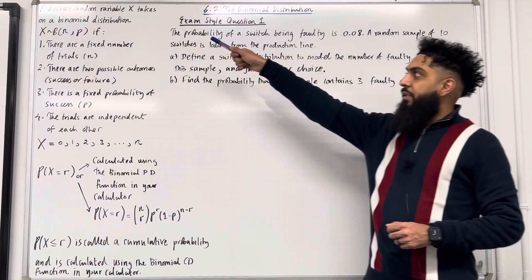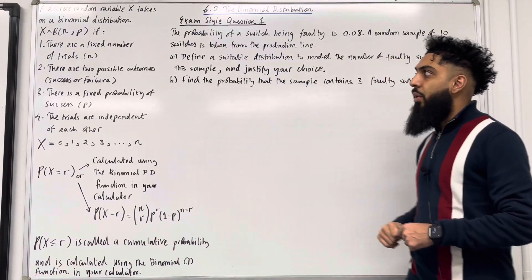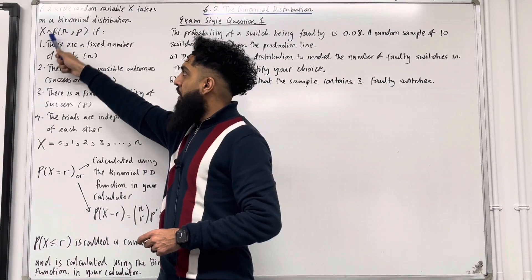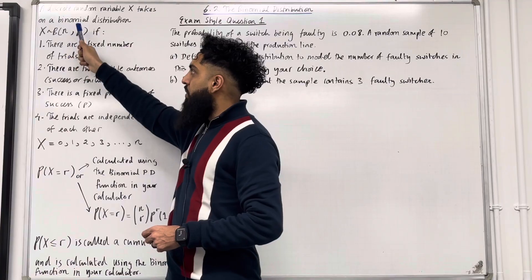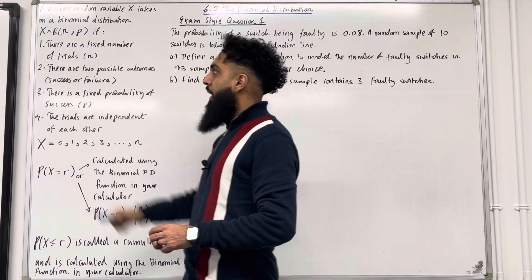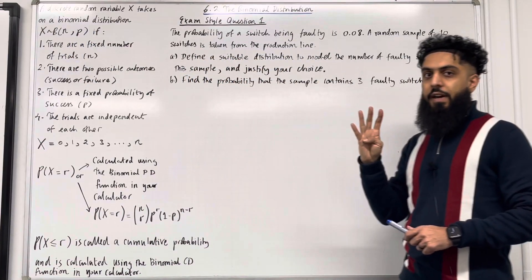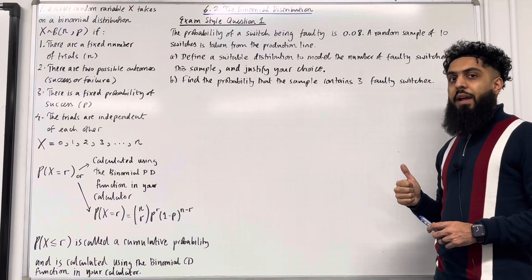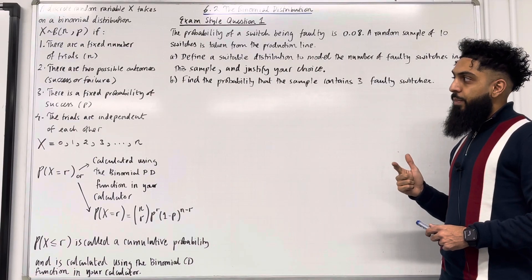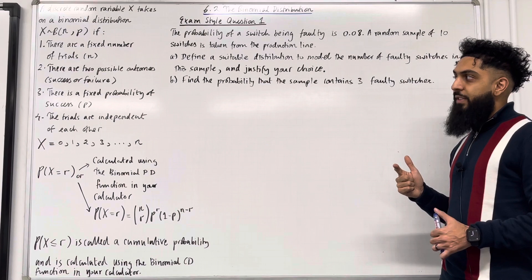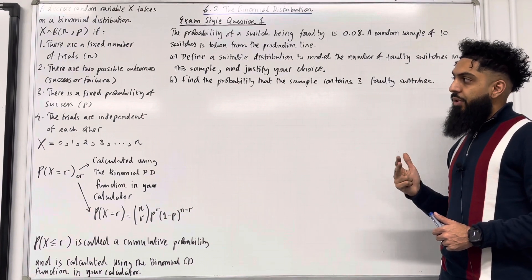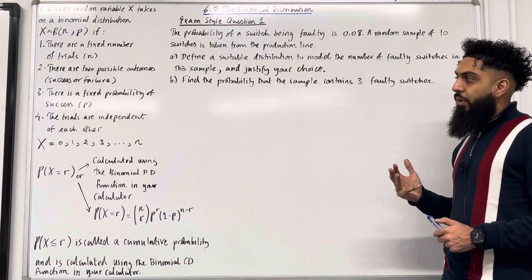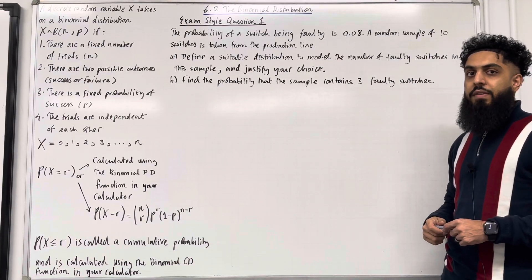A discrete random variable X takes on a binomial distribution, written as X ~ B(N, P), if four conditions are satisfied. Number one, there are a fixed number of trials denoted by N. Number two, there are two possible outcomes: success or failure. Number three, there is a fixed probability of success denoted by P. And number four, the trials are independent of each other.